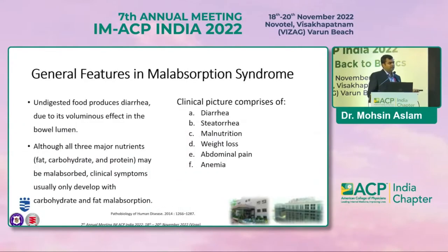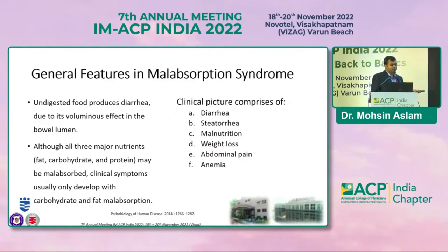Clinical features include diarrhea, steatorrhea, malnutrition, weight loss, abdominal pain, and anemia. Although all three major nutrients may be malabsorbed, the clinical symptoms are majorly due to the malabsorption of fat and carbohydrates.